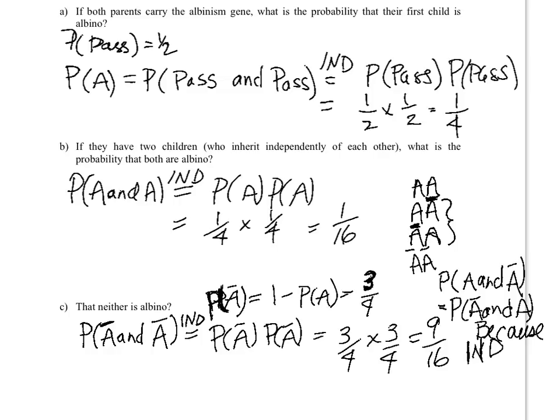So what is the probability of A and not A? I'm going to multiply. The probability of A is one fourth, the probability of not A is three fourths, and that's why we get three sixteenths.